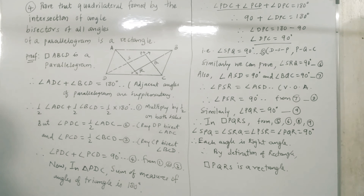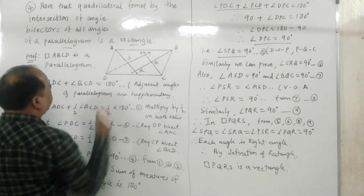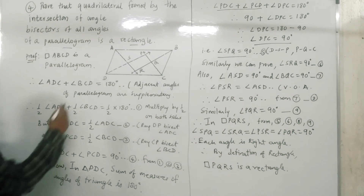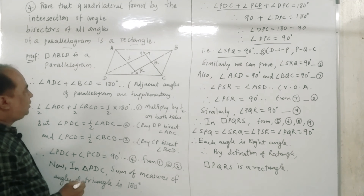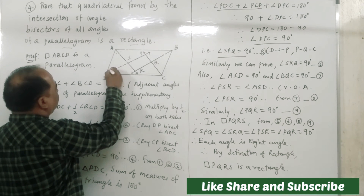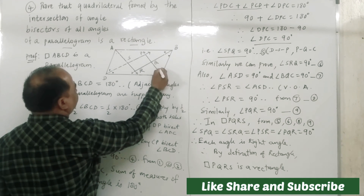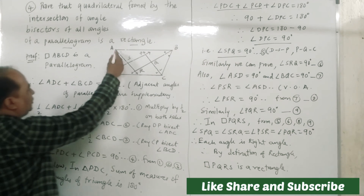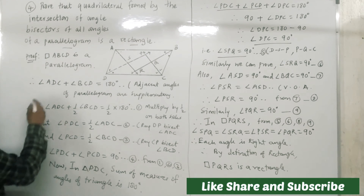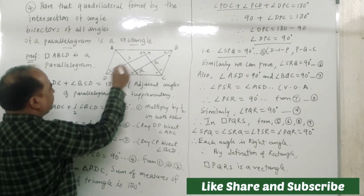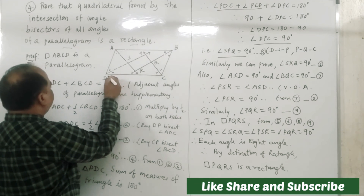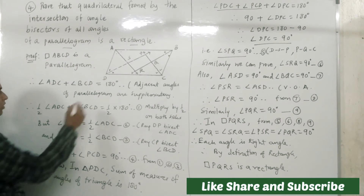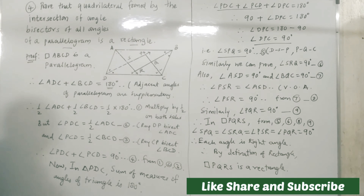Example four: prove that the quadrilateral formed by the intersection of angle bisectors of all angles of a parallelogram is a rectangle. Here we consider parallelogram ABCD. These are the angle bisectors of parallelogram ABCD. We have to prove that quadrilateral PQRS is a rectangle. Since ABCD is a parallelogram, angle ADC plus angle BCD equals 180 degrees — adjacent angles of a parallelogram are supplementary.